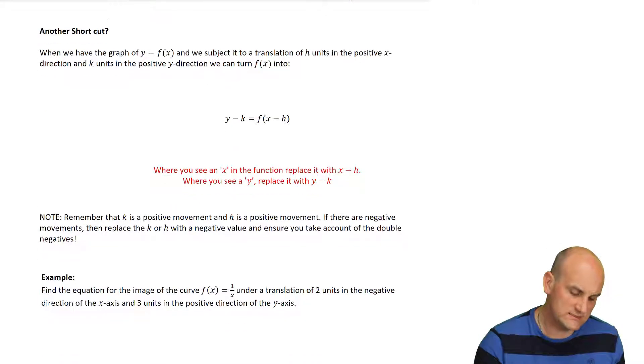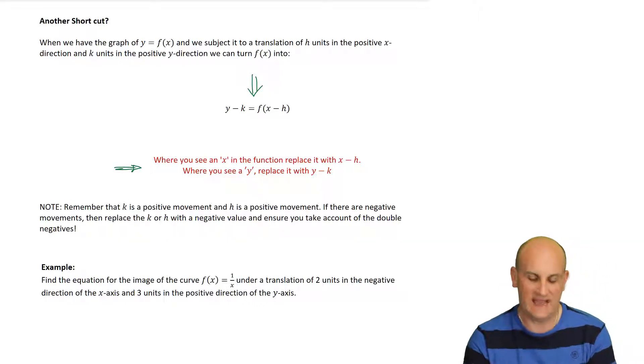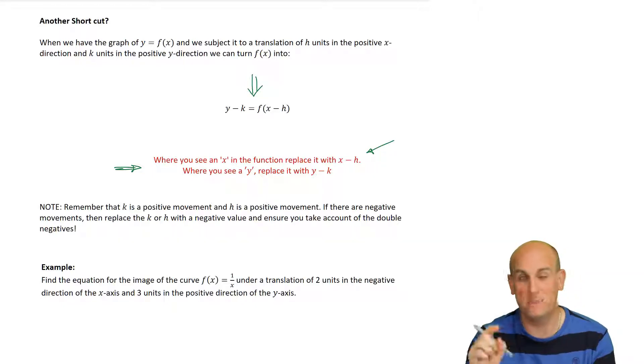Now, there are such things as shortcuts, and I get very, very nervous with shortcuts. But, basically, the idea is using this equation here that the red sort of typifies it, and I'll explain. When you see an x in the function, you can actually replace it with x minus h. Now, h here is a positive movement. If you have a negative movement, you'd replace h with minus something. And, as such, that would make a minus and a minus, and I'll come back to that in a second. Likewise, when you see a y, replace it with y minus k. So, if you're moving things vertically or up or down, then in which situation that k is a positive movement. If you have a negative movement, you'd replace k with minus the value of k.